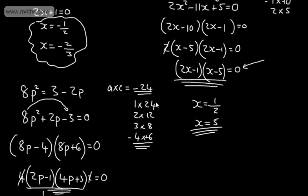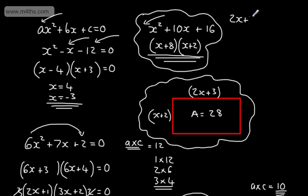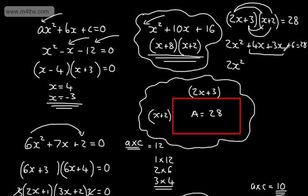Let's go back to the rectangle example and solve it. The area is 28 square units, and we know area equals length times width. So: 2X plus 3 multiplied by X plus 2 equals 28. Expanding the brackets: 2X squared plus 4X plus 3X plus 6 equals 28. Rearranging into the form AX squared plus BX plus C equals 0 gives us 2X squared plus 7X minus 22 equals 0, since 6 minus 28 is minus 22.